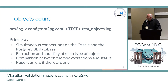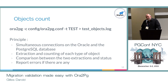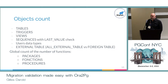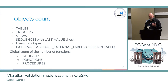In ORA2PG, there is an action called TEST which allows you to run several tests comparing the PostgreSQL database with the Oracle database. There are typically two connections: one on the Oracle database and the second on the PostgreSQL database. Each object is counted and compared, and if there is some difference, you will have an error reported. The count of objects includes tables — checking if you have the same number of tables in Oracle and PostgreSQL — triggers, views, sequences. It also checks the last value for sequences to be sure you will start at the same value when you go into production.